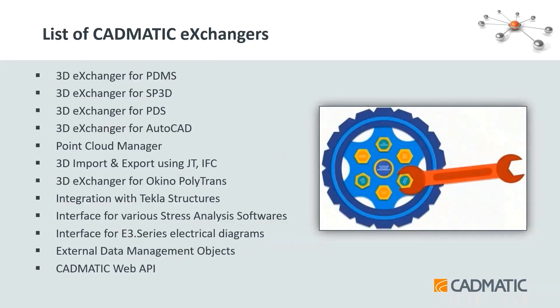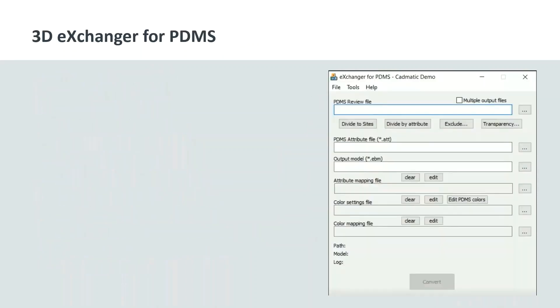Here is the list of exchangers available with CADMATIC: exchangers for PDMS, SP3D, PDS, AutoCAD, and Tekla; you can import various file formats such as JT and ISP; a Point Cloud Manager; an interface to export stress analysis formats; an interface for E3D CDS electrical diagrams; external data management; and Web API. This is quite a comprehensive list, and we'll go through all of it in the next 20–25 minutes.